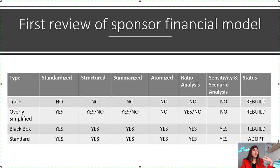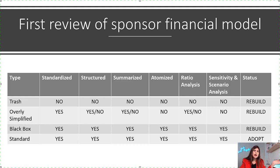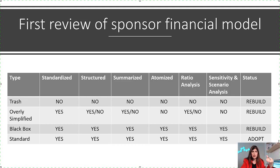Then there are models I call overly simplified. It's a very delicate balance between simplicity and complexity. You need to know the story of the project — at which stage you are — because maybe a simpler model is justifiable at that stage. But it's always better to have some spare rows in case you want to add additional items as you progress through the due diligence of the project.